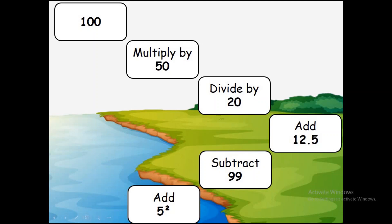So here we go. 100 times 50 is 5000. Then 5000 divided by 20 is 250.